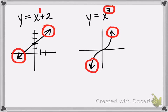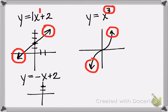Now, if I switch the leading coefficient — instead of positive 1 on y equals x plus 2, I switch it to negative 1 — so now I have y equals negative x plus 2. It still has a y-intercept of positive 2, but now the slope is negative 1. Notice that the ends of the graph still point in opposite directions, but now the graph starts out pointing up and ends up pointing down.